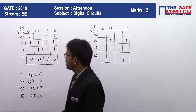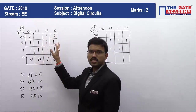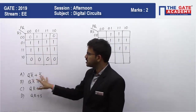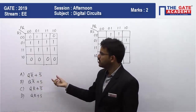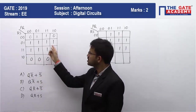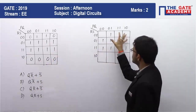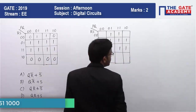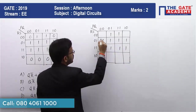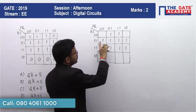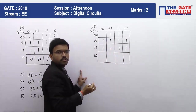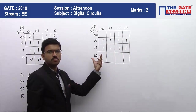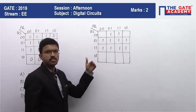He has filled the K-map with 1s and 0s. If you observe the choices, the options are in SOP form. Whenever you want to get SOP form, consider the 1s. So I have considered only the 1s — those are the minterms. Now we can do the grouping of these 1s. We have to group the maximum possible adjacently placed 1s in decreasing powers of 2.